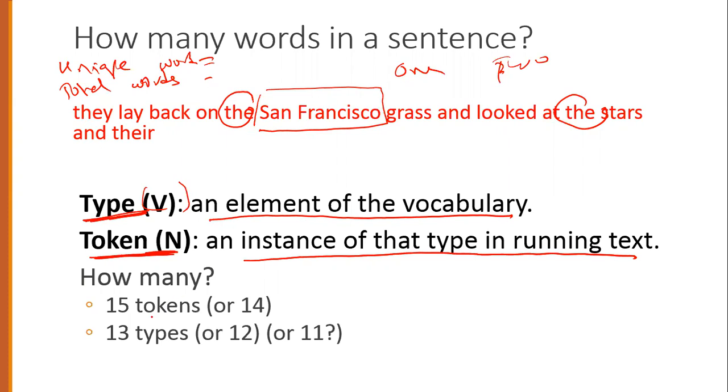If you have unique words, these are elements of a vocabulary — which we represent as V, and also call types. Tokens, which we represent as N, are the total words, not unique words. Tokens means total word count, not unique word count.